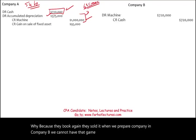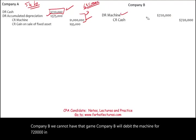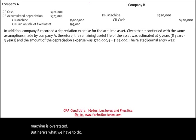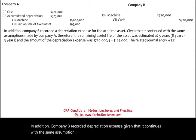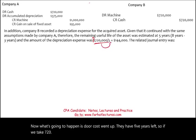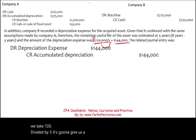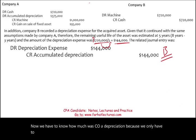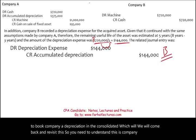Company B will debit the machine for $720,000 and credit cash. The problem here is that the machine is overstated when we prepare the consolidated financial statement. In addition, Company B recorded depreciation expense. Given that it continues with the same assumptions and has five years left, if we take $720,000 divided by 5, that gives us a yearly depreciation of $144,000 for Company B. We need to know how much Company A's depreciation was, because we only book Company A's depreciation in the consolidated statements.